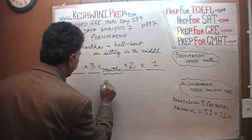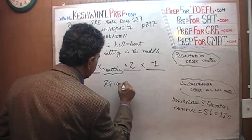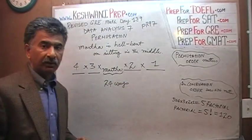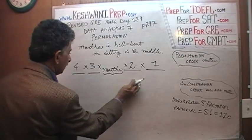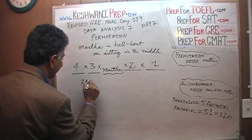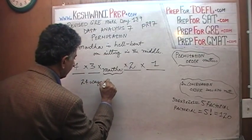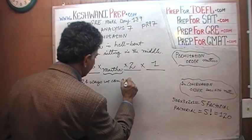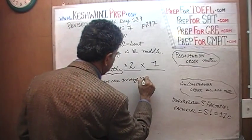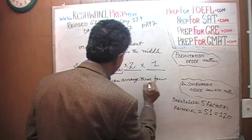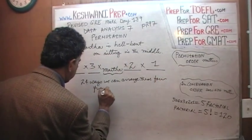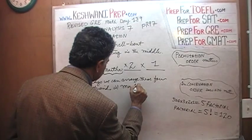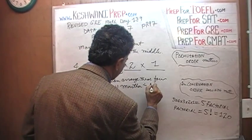There are 24 ways we can arrange people so that Martha sits in the middle. 24 ways we can arrange these four friends with Martha in the middle.